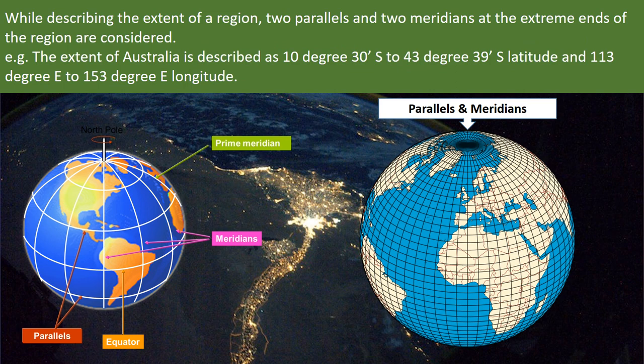To describe the extent of a region, we need to consider two parallels and two meridians at the extreme ends of the region. For example, the extent of Australia is described as 10 degree 30 minutes south to 43 degree 39 minutes south latitude and 113 degree east to 153 degree east longitude.